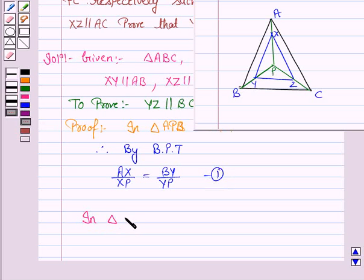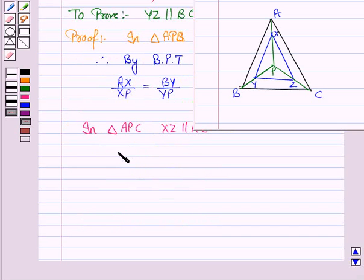XZ is parallel to AC. Therefore, AX upon XP is equal to CZ upon ZP. Let's name this as equation two.